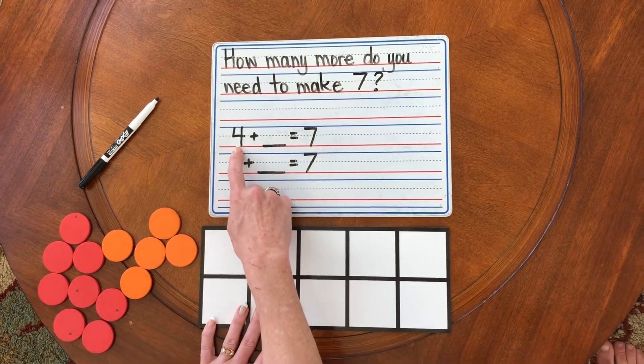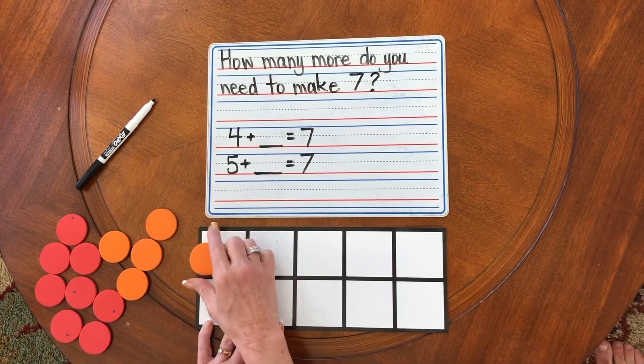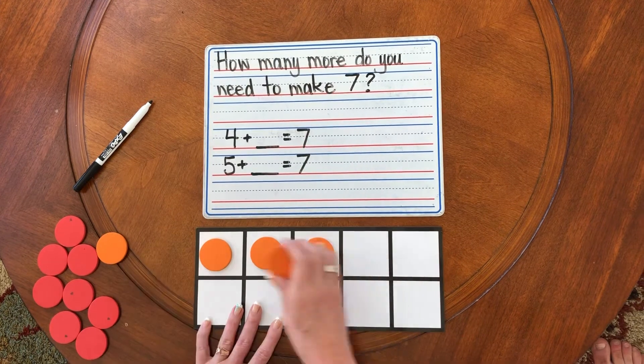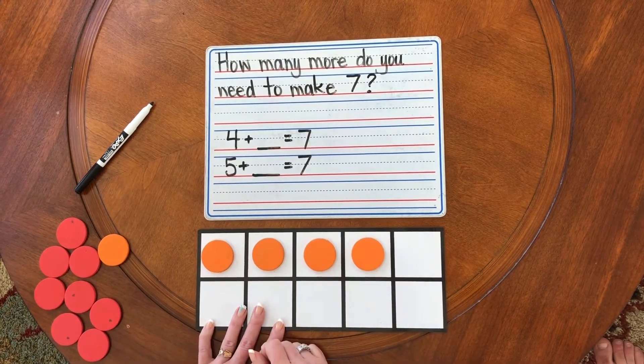Let's start with four. One, two, three, four orange counters.